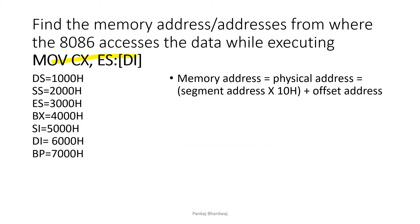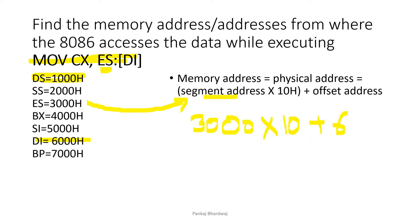Next is MOV CX,ES:[DI]. This is again a segment override prefix. By default, DI accesses DS, but here it is changed to the extra segment ES. Physical address = ES×10H + DI = 3000×10H + 6000H = 30000H + 6000H = 36000H. Since CX is a 16-bit register, two memory locations are required: 36000H and 36001H.